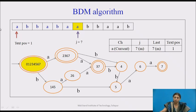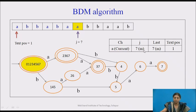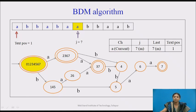We start at the first position in the text and process characters from right to left. The window shown in blue represents the current text window. The first character to process is at position m (the length of the pattern, which is 7). Since we have not yet found any suffix, 'last' is initialized to 7 and the text position is 1. We process the character 'a' and reach state numbers 2, 3, 6, 7.